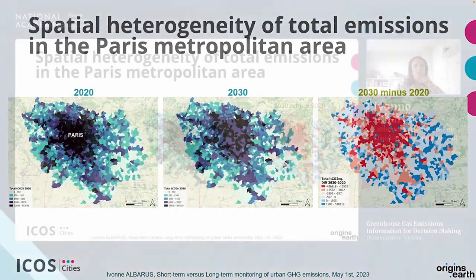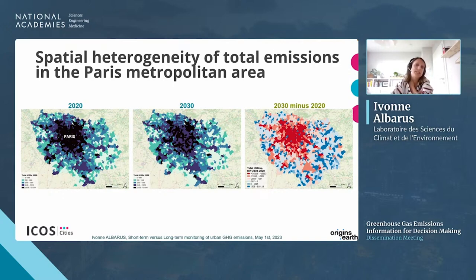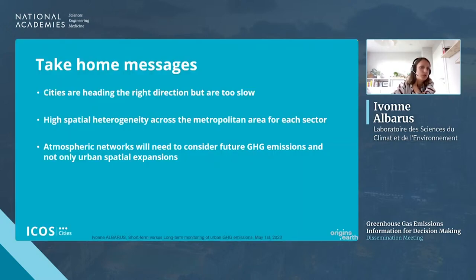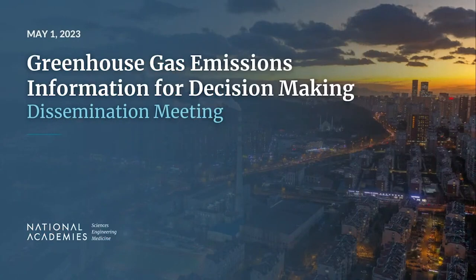Looking at total emissions for Paris, the spatial heterogeneity observable at very fine scales is important for designing an optimal atmospheric monitoring network for the future. The take-home messages: cities are heading in the right direction but still too slow; spatial heterogeneity is significant; and future urban networks need to consider future GHG emissions, not only current urban expansions.